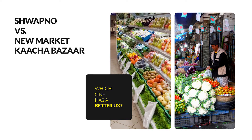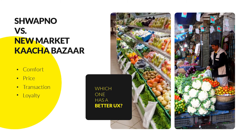Here's another localized example: Shopno supermarket versus New Market Kacha Bajar. Shopno is basically a supermarket, and New Market Kacha Bajar could be the equivalent of the farmer's market of the Western world. Where would you go and why? If we try to figure out some distinguishable characteristics between these two types of marketplace, we get comfort, price, transaction type, and loyalty.